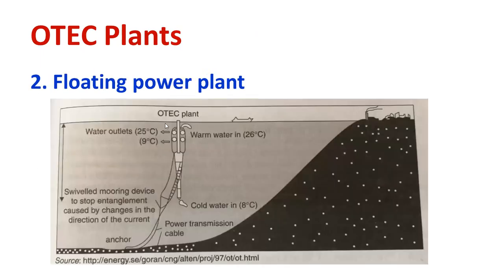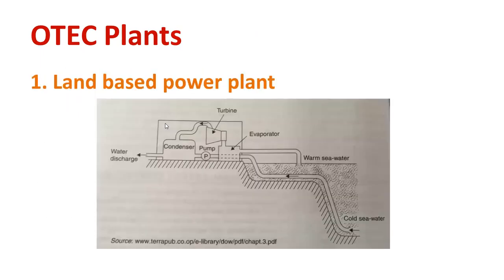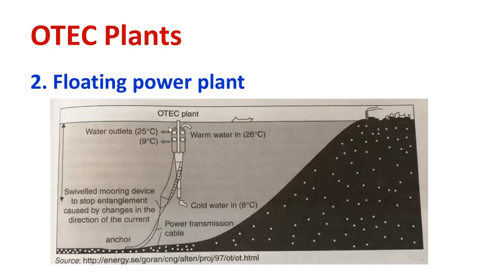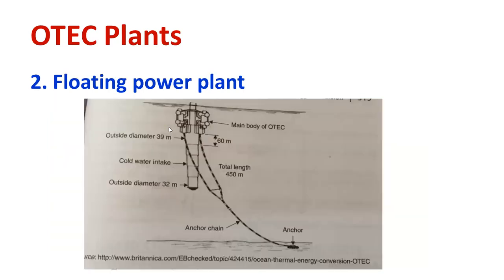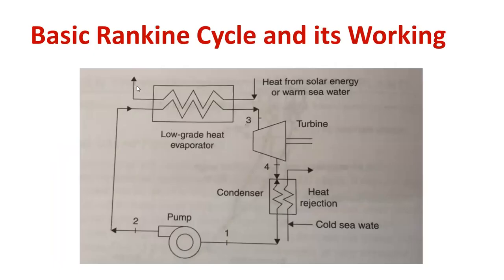What is the difference between a land-based power plant and a floating power plant — that also you have to remember. Land-based means the generation takes place at the land area, nearby the sea shore. Floating power plant is connected with ships — it is a floating station. You have to explain about the basic Rankine cycle — how does it work, already discussed. This diagram can be drawn and explained in brief.